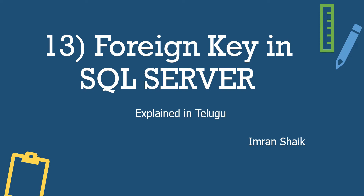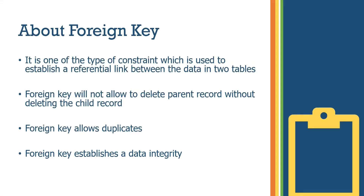Let me give a brief description about foreign key. It is one type of constraint which is used to establish a referential link between the data in two tables. A constraint is nothing but a condition. Foreign key will not allow deleting a parent record without first deleting the child record.